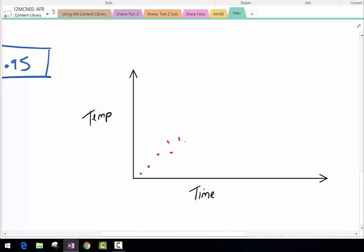If we drew a line in, it would be like that. That would be what we call a positive correlation because it's getting bigger as time goes by.